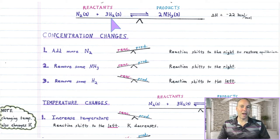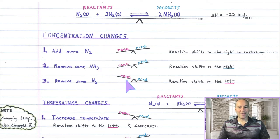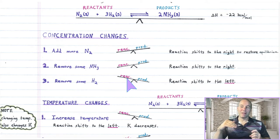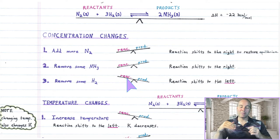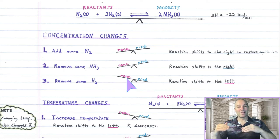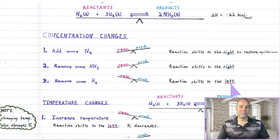For our third disturbance, let's remove some of the reactant hydrogen. If you remove some reactant, now the reactant side is light. And it's going to have to shift in the backwards direction — some of the product material will have to reform some reactant in order to restore equilibrium. So the reaction shifts to the left. That's how you deal with concentration changes.